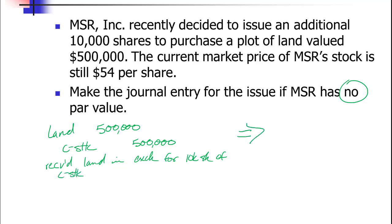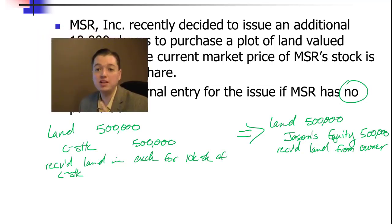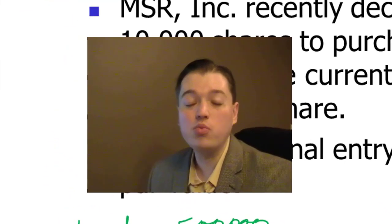Recording the issuance of common stock is really that straightforward and simple. Most of our transactions with owners stay pretty simple because we've already done the hard work recording assets, liabilities, profit, and closing entries. What we need to talk about next is what happens when a company decides to buy back some of those shares — it's called treasury stock, and we'll talk about it in our next segment.